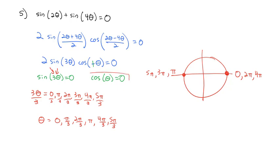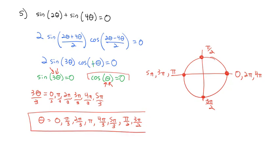Adding those two solutions to our list — π/2 and 3π/2 — and because it's just a regular θ we don't need extra laps around the circle. All of these angles will give us a true statement for sin(2θ) + sin(4θ) = 0.